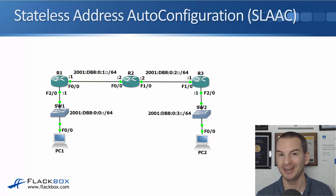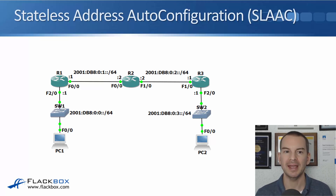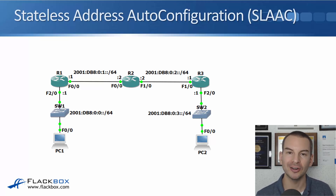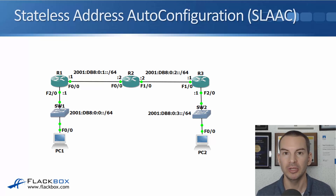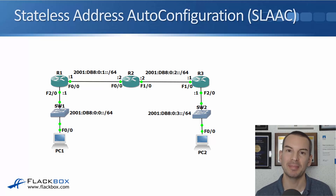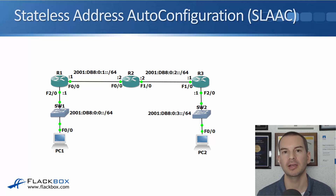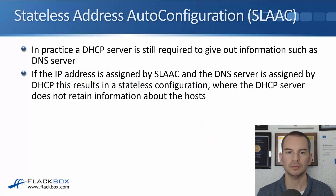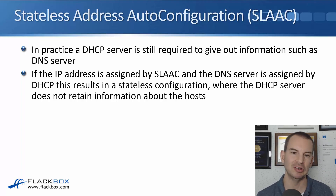But the problem, which is kind of unbelievable when you hear it, is that when SLAAC was designed, there's no mechanism for giving out other information other than the router address. So the PC cannot learn its DNS server from SLAAC. And obviously DNS is completely critical to networking — we need DNS for modern networks to work. So you're still going to need a DHCP server anyway. There are some standards being put in place which will support this additional information, but there's not really widespread support for that yet.